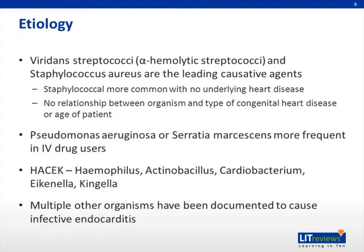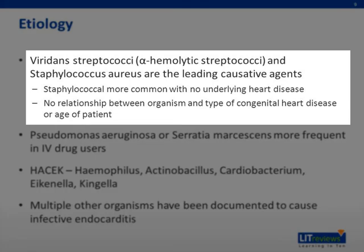Knowing the most common organisms to cause endocarditis is extremely important. Viridans streptococci or alpha-hemolytic streptococci and Staphylococcus aureus are the leading causative agents. Being more specific, staphylococcal infections are more common with no underlying heart disease. There is no relationship between organisms and the type of congenital heart disease or the age of the patient.